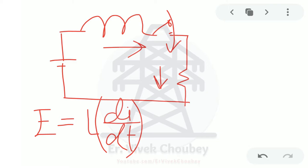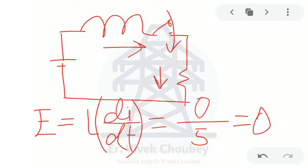What will be the change in current? Since the switch is closed and this is a DC battery, there is no change in current — di = 0 over 5 seconds. So the EMF generated is zero. This means in a normal situation, when DC current is passing through the inductor with no change in current, there will be no EMF generated across the inductor.